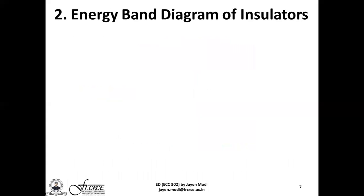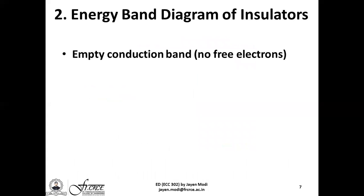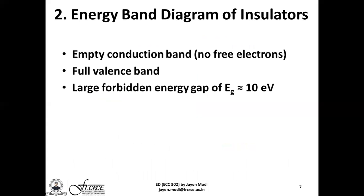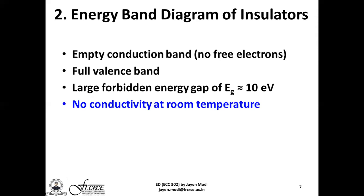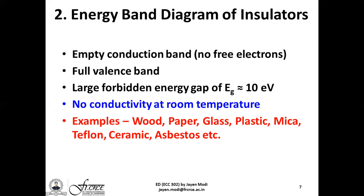For insulators, the conduction band is absolutely empty with no free electrons, and the valence band is completely full. Due to a large forbidden energy gap of roughly 10 electron volts between the valence and the conduction bands, electrons technically cannot cross this gap and jump from the valence band into the conduction band. So at normal room temperatures, insulators do not conduct any electrical current at all. Examples of insulators include wood, paper, glass, plastic, mica, asbestos, teflon, ceramics, etc.